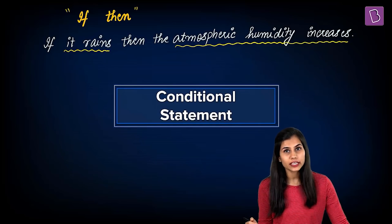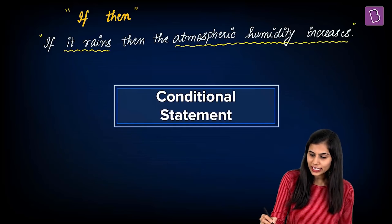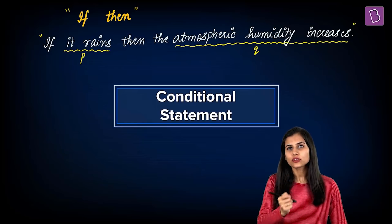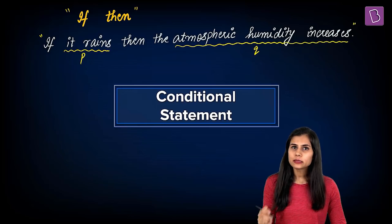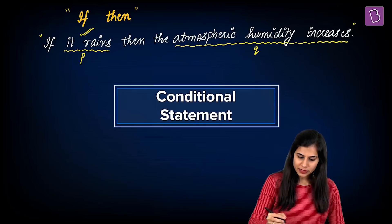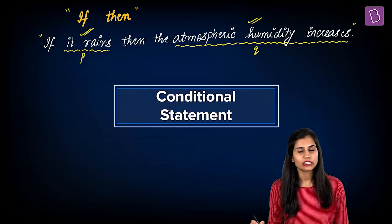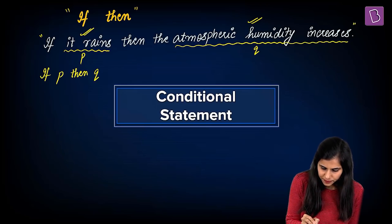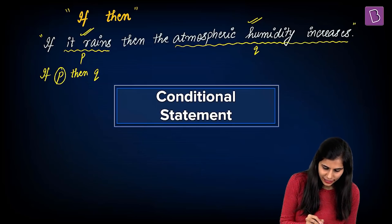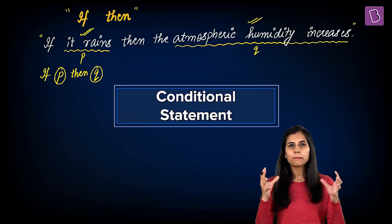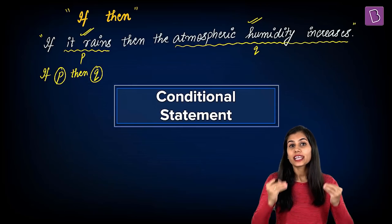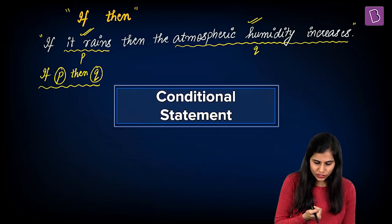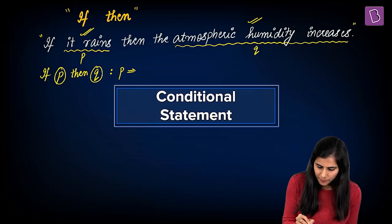If you dig a bit deeper into this statement, you'll realize it is actually a compound statement having P and Q as its two respective component statements or substatements. Here, P is the simple statement 'it rains' and Q is the simple statement 'the atmospheric humidity increases.' In compact form, I can write this as 'if P then Q.' These two simple statements P and Q combine together with the phrase if-then, giving rise to this if-then implication, denoted by P implies Q.